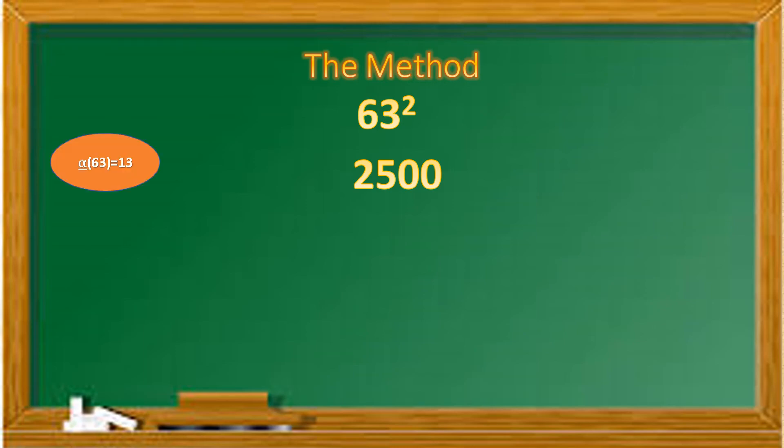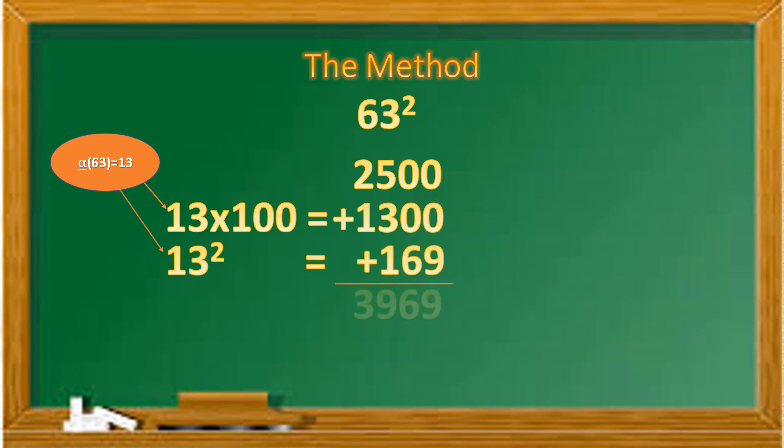Yes, alpha of 63 is 13, and this 13 will give us the other two numbers. The first of which is 1300, and the second is of course the square, that is 169. Adding all of them, we will get our number as 3969, which is the square of 63.